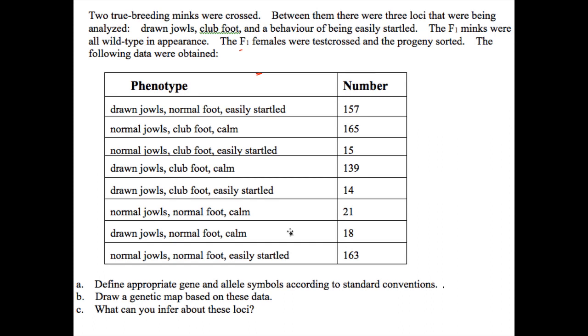We're dealing with true breeding minks again, and we've got three loci that are being analyzed: drawn jowls, clubfoot, and being startled. And because the F1s are all wild type, we know that those are all recessive alleles.